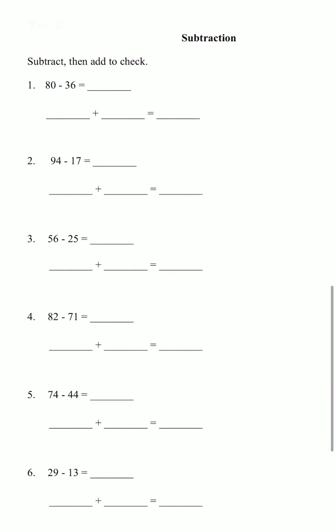And let's do subtract then add to check. 80 minus 36. We're going to take one tens. So that is going to be seven. And this is a 10. 10 minus 6 is 4. 7 minus 3 is 4. So we have 44.